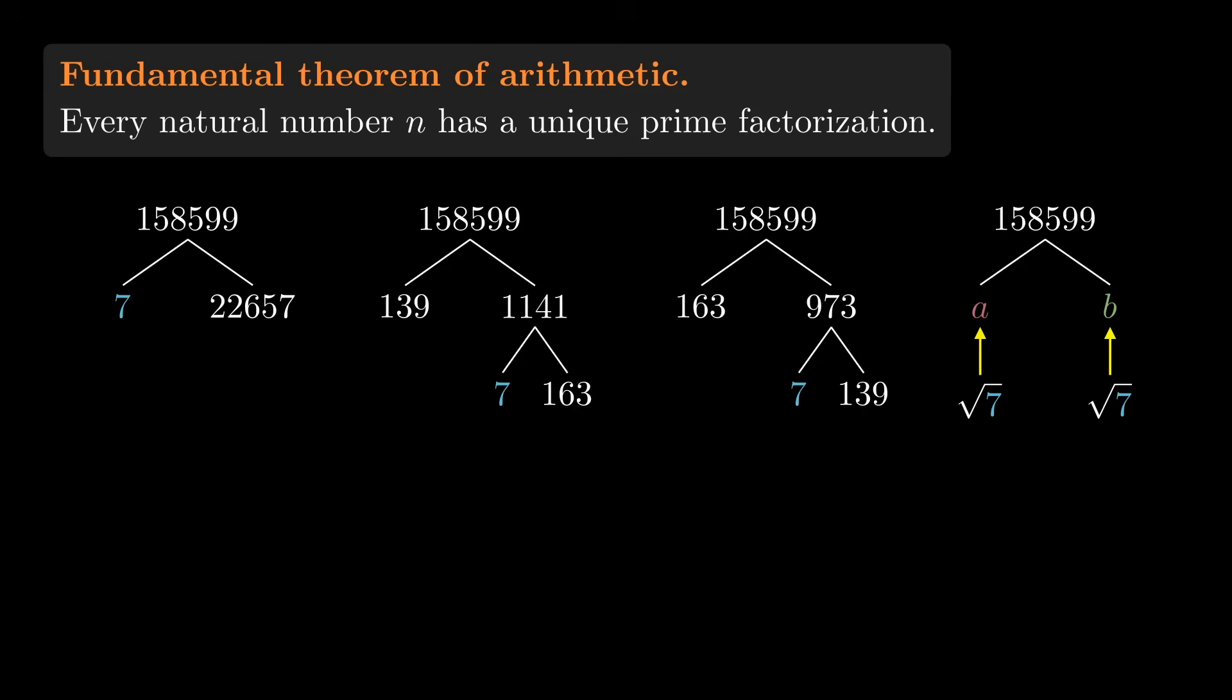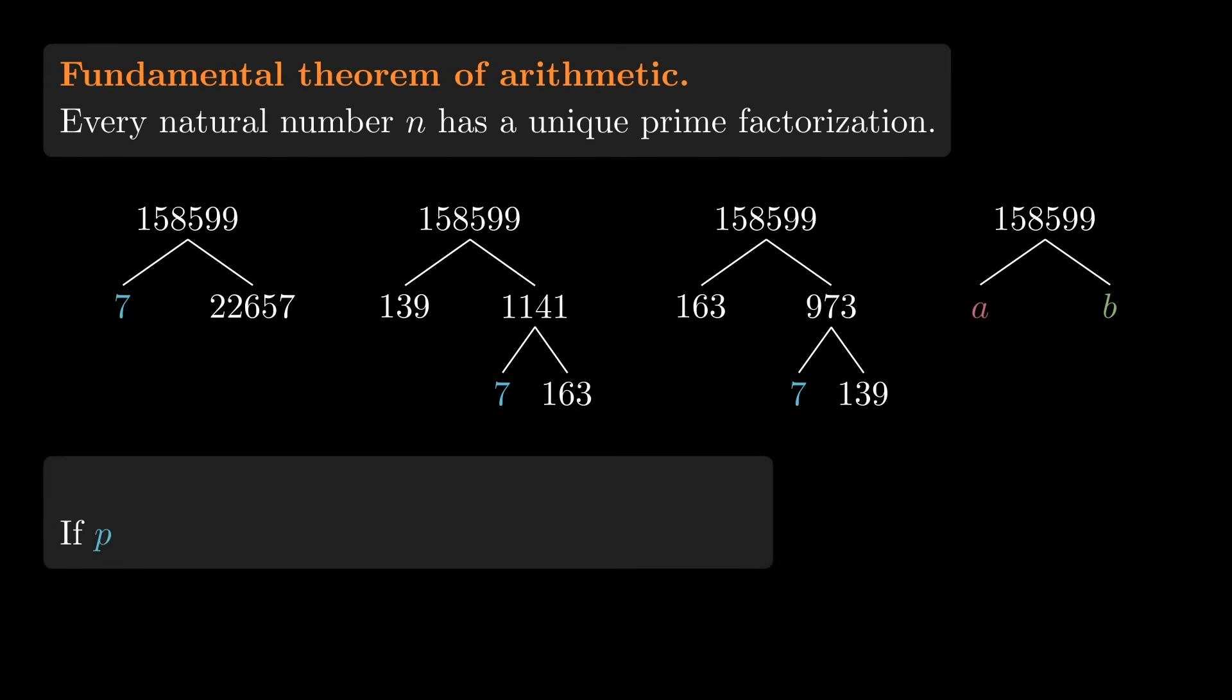And of course, not just for 7. If p is a prime number, we need to show that if p divides a times b, then p divides a or p divides b. This is called Euclid's Lemma. If we can understand why Euclid's Lemma is true, then we will have shown the fundamental theorem of arithmetic. So that will be our goal for the rest of the video.